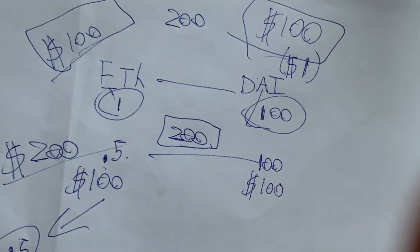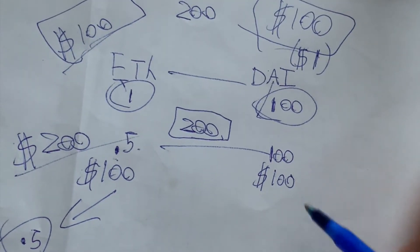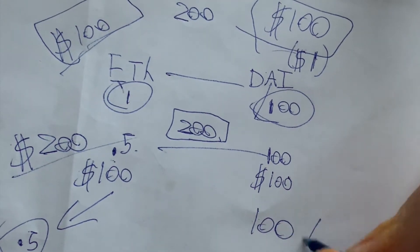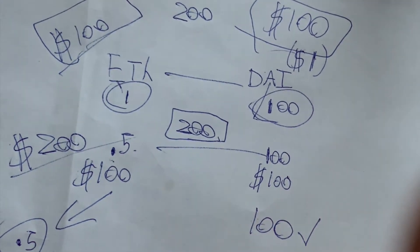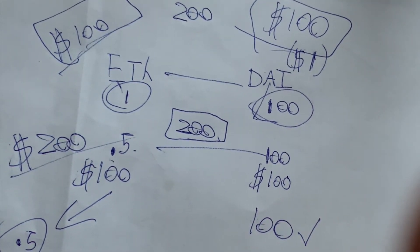I can only withdraw half an ETH because you provided liquidity of $100 worth and $100 worth of DAI. So that's where the problem of impermanent loss comes in. You have 100 DAI still because it stayed the same, but now you have half an ETH. Now you lost some money on it.